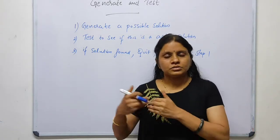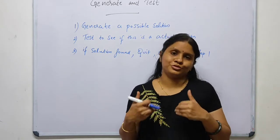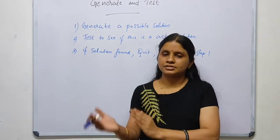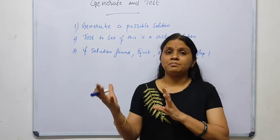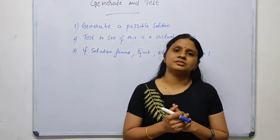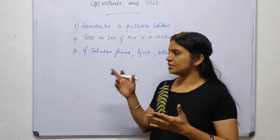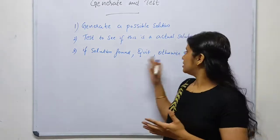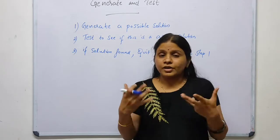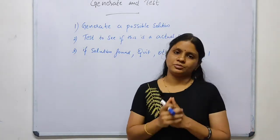The second step is the role of the Tester module. It will test to see if this is an actual solution or not. We compare the chosen path with the goal state to see if it is matching. If the solution is found, we can stop; otherwise we go back to step one — that is backtracking. This is how the DFS with backtracking concept is used.